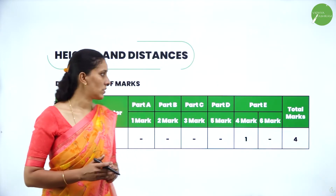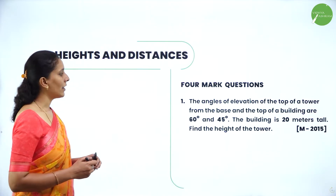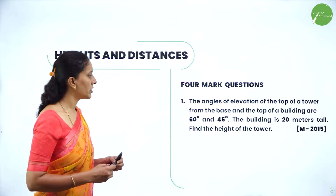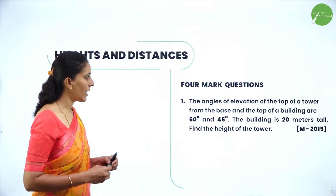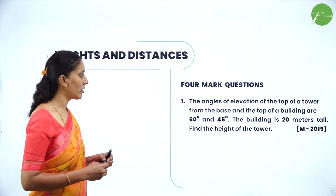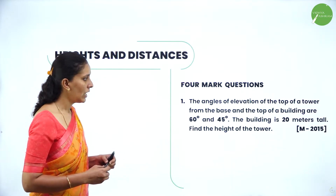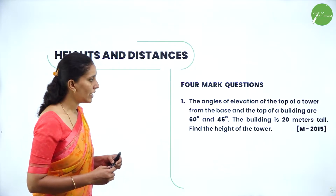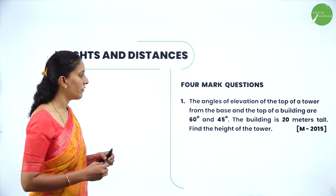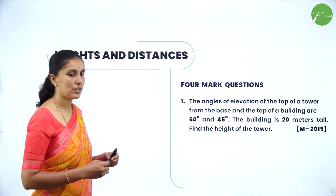From this chapter, you will get only one question in your examination under section Part E, where you will get questions in the form of 6 plus 4. So you will get one form marks from this chapter. Let's see the questions now. The angles of elevation of the top of a tower from the base and the top of a building are 60 degrees and 45 degrees. The building is 20 meters tall. Find the height of the tower.